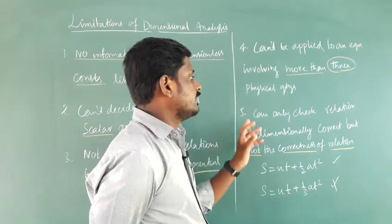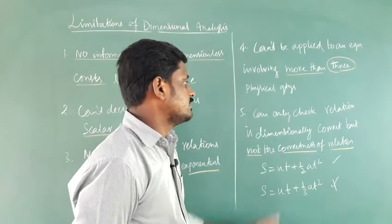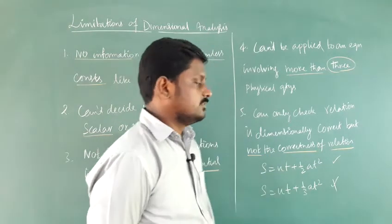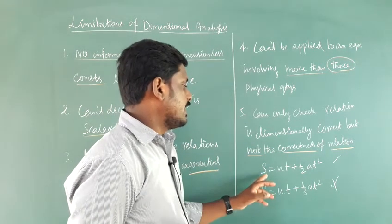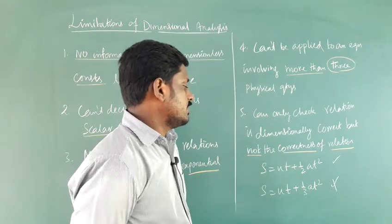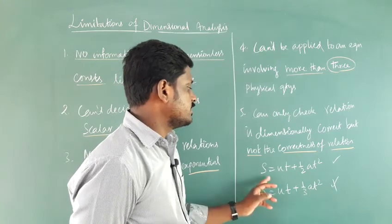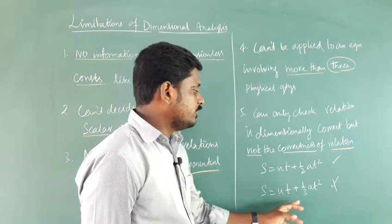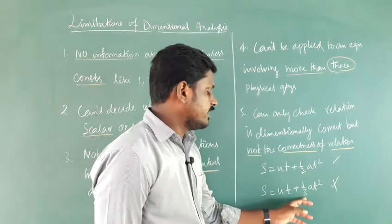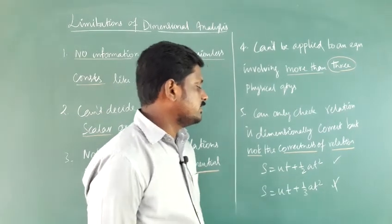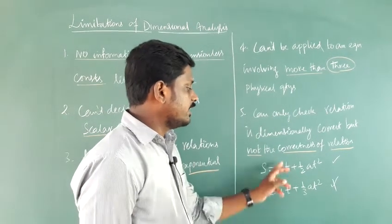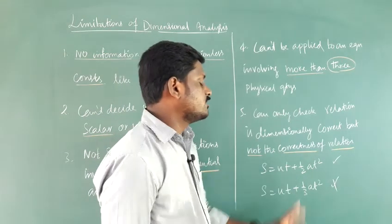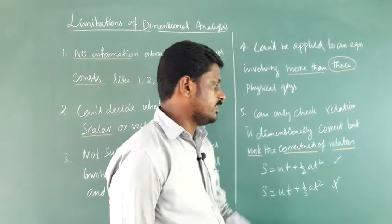The fifth limitation is that it can only check whether a relation is dimensionally correct or not, but not the actual correctness of the relation. For example, the second equation of motion is S = ut + ½at². Another equation could be S = ut + ⅓at². Both are dimensionally correct, but only the first one with ½at² is the correct equation.